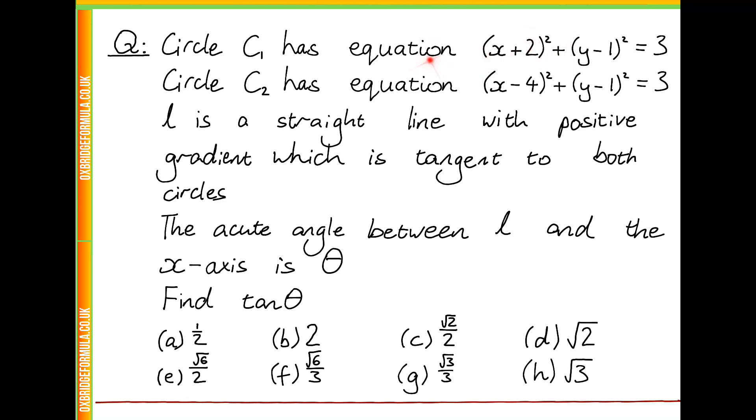So, the equation for circle C1 tells us that it has centre at x equals minus 2, y equals 1, and has radius square root 3, whereas circle C2 has centre at x equals 4, y equals 1, and it also has radius square root 3.